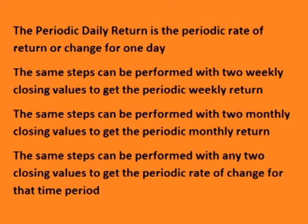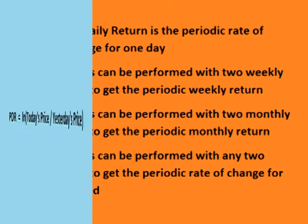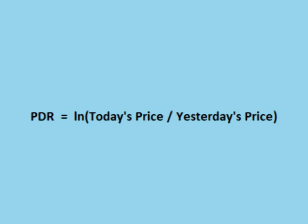The periodic daily return is the continuously compounded rate of return for one day. We could also follow the same steps using two monthly prices to get the periodic monthly return, or any two time frames to get the periodic rate of return for that time period. The PDR is the periodic rate of change of price for each trading day.